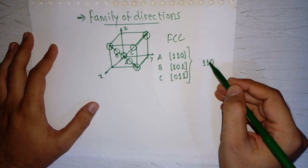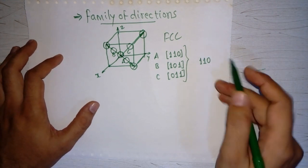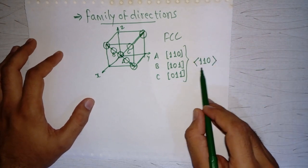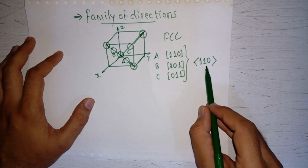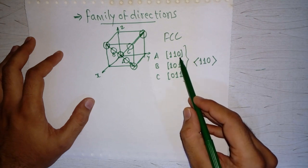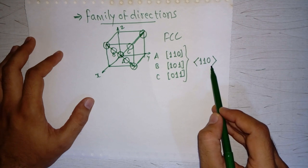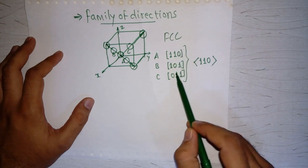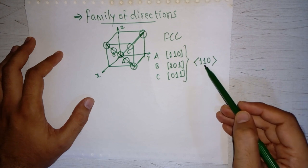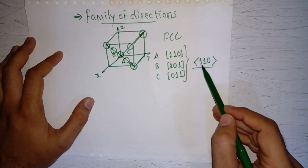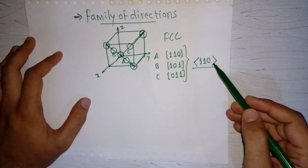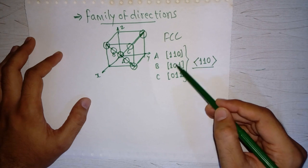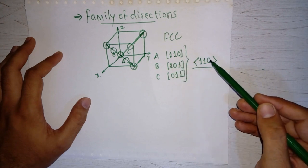This is called a family of directions. The family of directions is written inside caret brackets, and the name of the family can be the name of any of its members. So the designation can be written as [1 0 1] or [0 1 1] as well. Whenever we see a designation inside caret brackets, such as <1 1 0>, we understand it refers to all directions: [1 1 0], [1 0 1], [0 1 1], [bar1 bar1 0], [bar1 0 bar1], [0 bar1 bar1], etc.